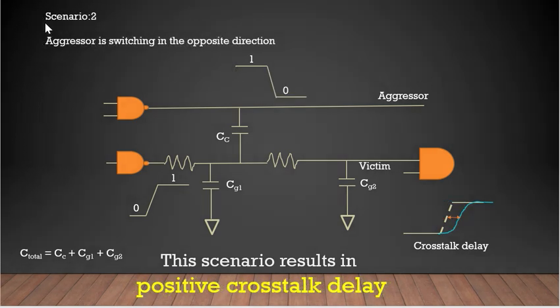Now let's take scenario 2: when aggressor and victim are switching in the opposite direction. Using the river and boat analogy again — if the boat is flowing in the opposite direction of the river, it will become slower. So similarly, if aggressor and victim are switching in the opposite direction, it will induce a positive crosstalk delay. Positive crosstalk delay means if switching was happening at t seconds, it will now happen a little late at t plus something seconds, because a positive delay has been introduced.